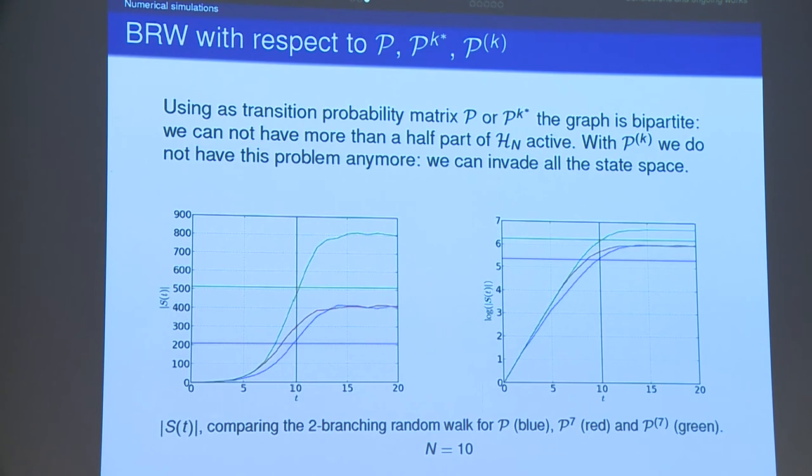Here I compare the evolution of the size of the active set, comparing the three mutational models I already discussed. So in blue I represent the simple point mutations. In red the multiple point mutation corresponding to matrix P power k star. And in green the other model of multiple point mutations. We observe that this last process is the fastest one in spreading and also is the only one which allows to cover all nodes simultaneously. This is due to a characteristic of the graph underlying by P and P power k star respectively which is the bipartiteness. The only non-bipartite graph is the one corresponding to the red curve. The horizontal blue and green lines represent the size of the active set as we estimated by the theorems I gave in the previous slide.